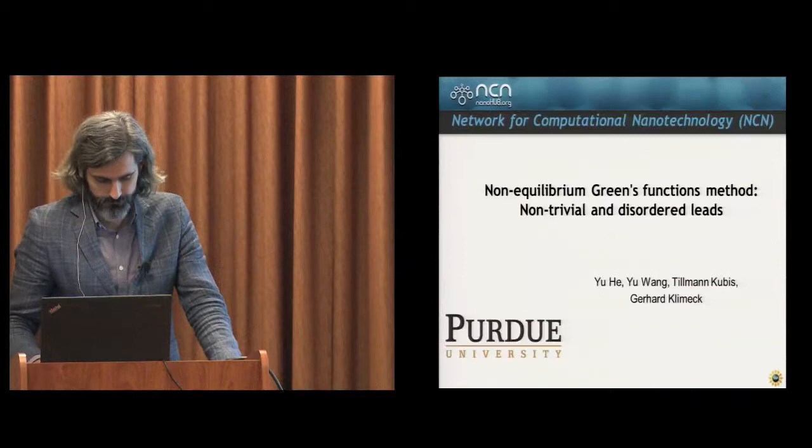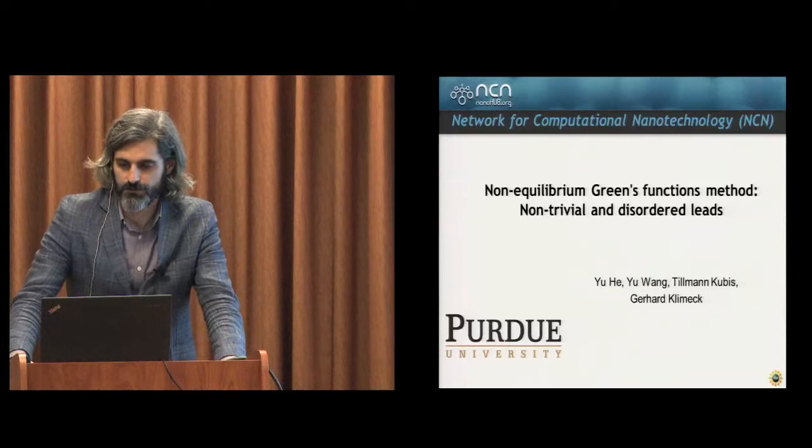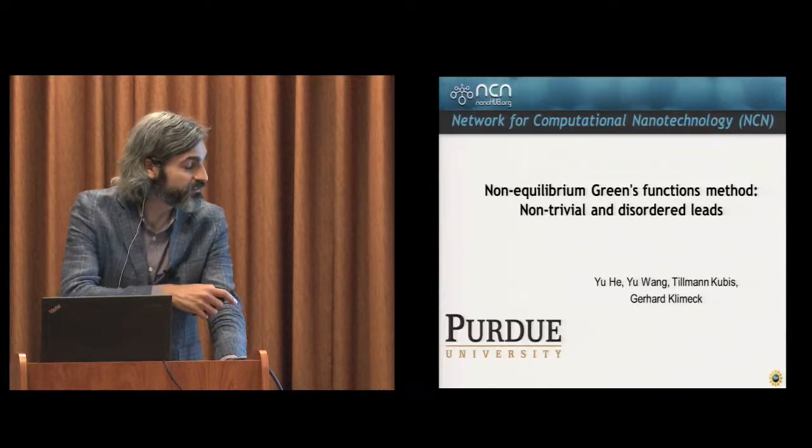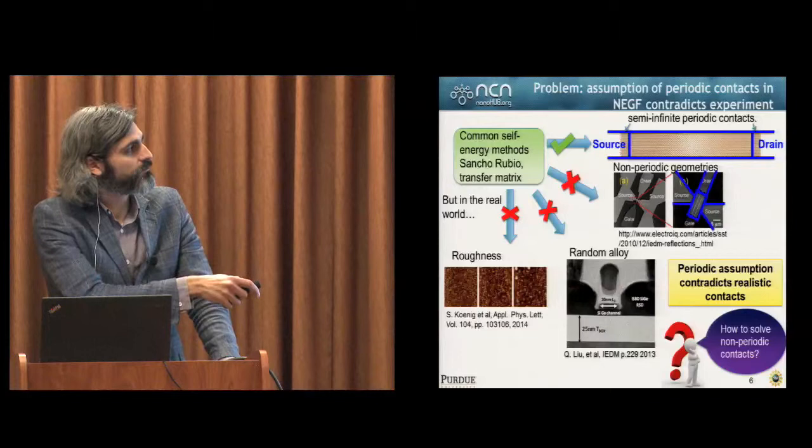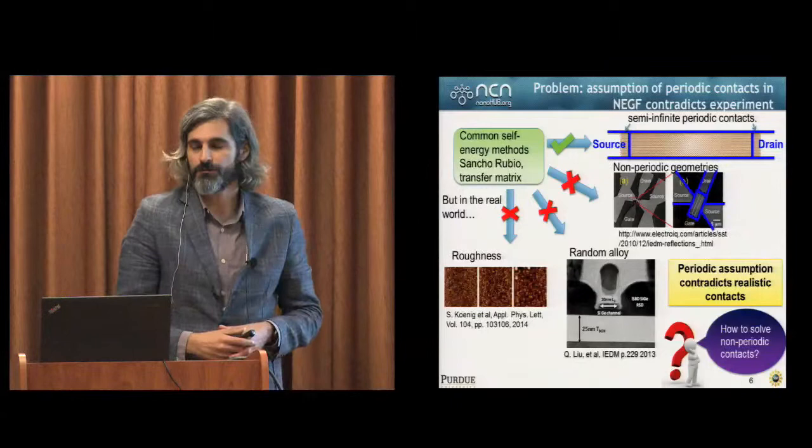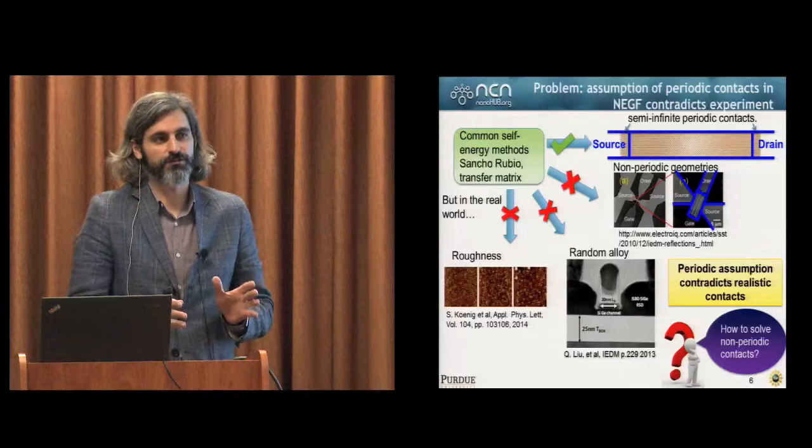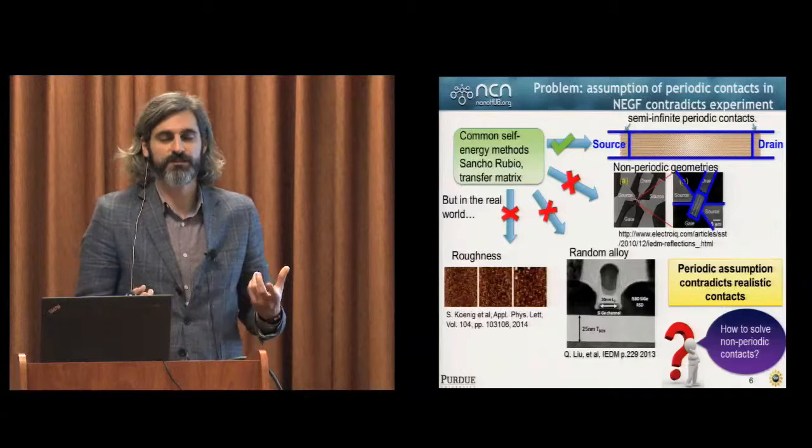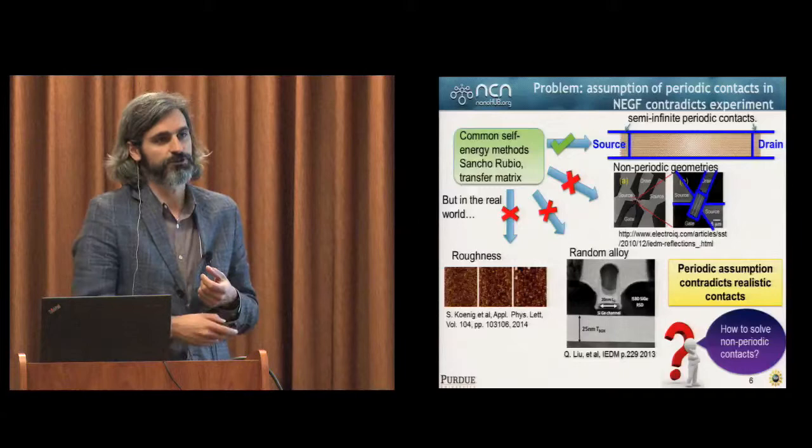I've got two science topics I wanted to talk about that we've done in the past year or so. The first - the main point here is that we're looking at non-trivial and disordered leads. If you look at the top right here, if you think of a regular transistor you've got this channel where electrons are going to flow through the middle of it. NEGF is the non-equilibrium Green's functions - this is one of the standard approaches to simulating quantum transport devices. Generally that assumes that the source and drain are ideal. The problem is that as devices get smaller and smaller, the contacts - the source and the drain - become more important as far as their influence on device performance.